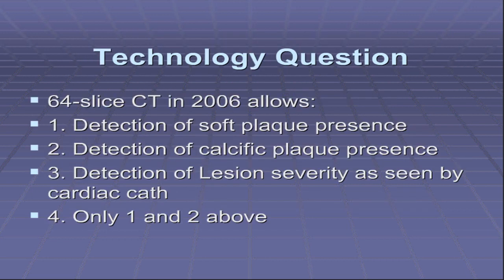But let's ask a question before we start. 64-slice CT, as you know it today in your practice in 2006 — what can it do? Can it detect lesions? Can it detect soft plaque? Can it detect calcific plaque? Can it detect lesion severity? Or only one or two of the above? In your practice today, what do you think you can do?